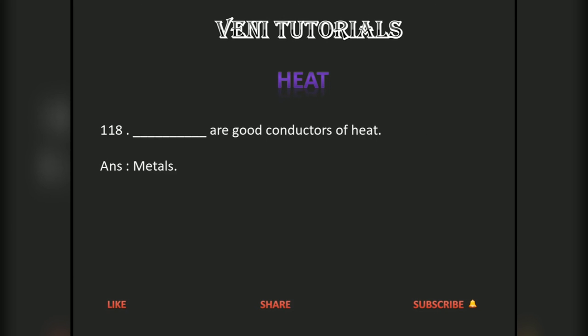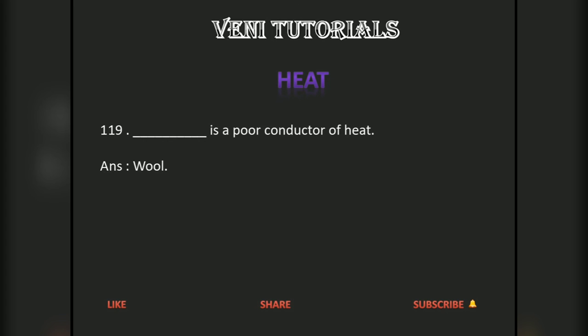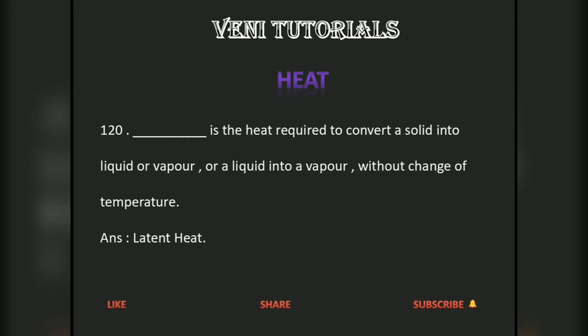Metals are good conductors of heat. Wool is a poor conductor of heat. Latent heat is the heat required to convert a solid into liquid or vapor, or a liquid into vapor, without a change of temperature.